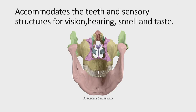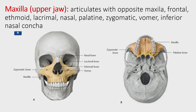The splanchnocranium is also important because it accommodates the teeth and sensory structures such as vision, smell, and taste. Moving to our main topic — the maxilla, or upper jaw. The maxilla articulates with the maxilla of the other side, and is also connected with the frontal bone, lacrimal bone, nasal bone, palatine bone, zygomatic bone, as well as the vomer and the inferior nasal concha.